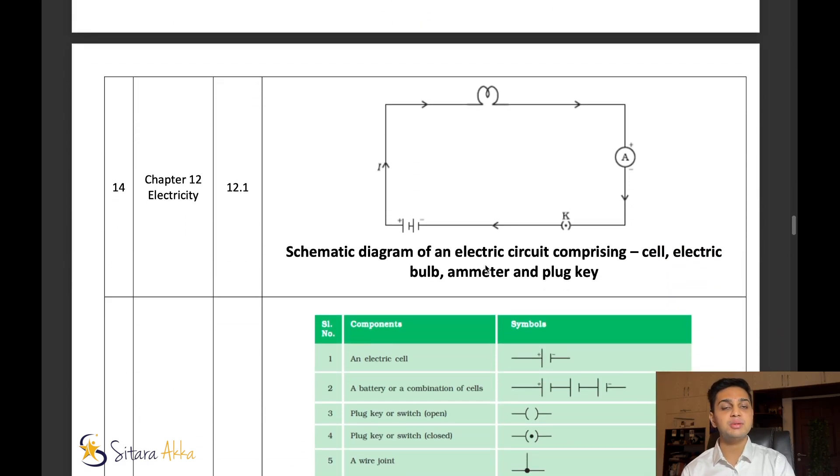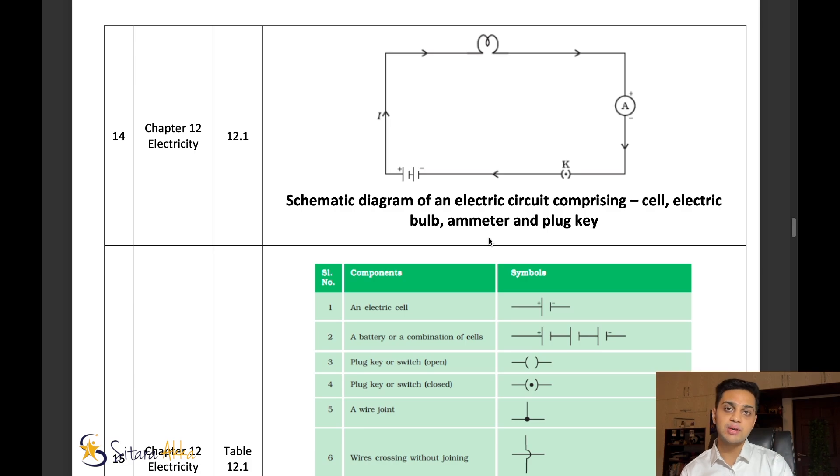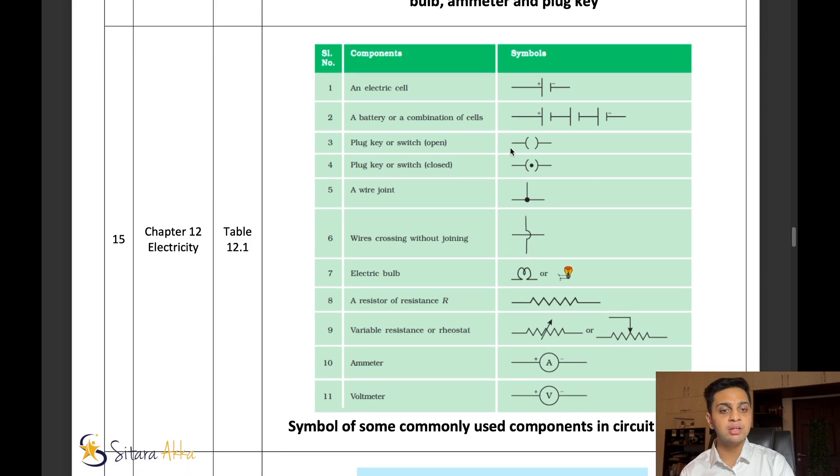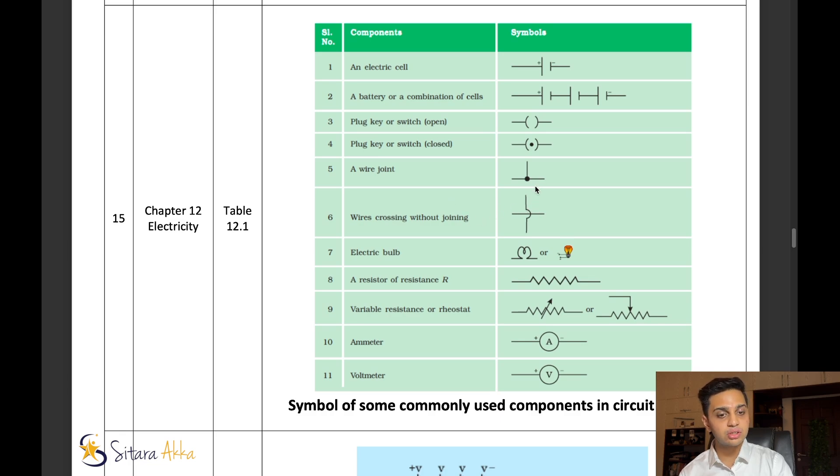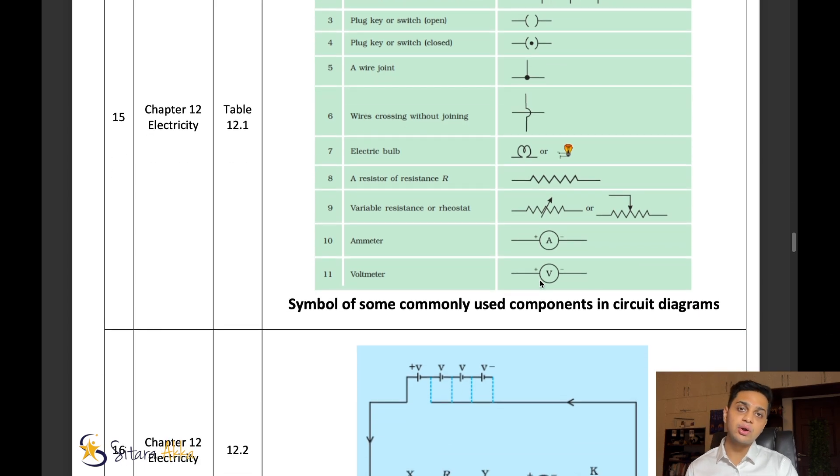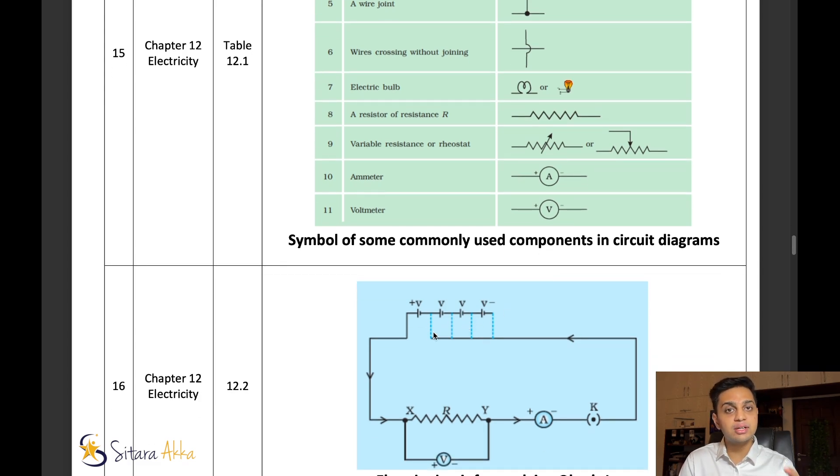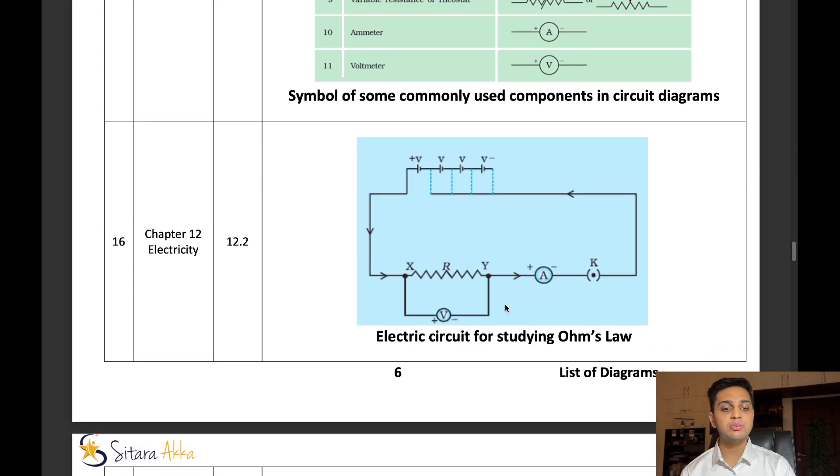Next is the electricity chapter. There are also a lot of circuit diagrams. The circuit diagrams are easy if you understand the chapter. But one thing which is very important in this chapter is this table. Please understand what are the symbols for each of the components. Understand the difference between the switch when it is open versus closed, wire crossing, junction, resistor, variable resistor, rheostat. Always mark the direction of current in the circuit diagram. If you draw instruments like ammeter or voltmeter, mark the plus and minus sign.